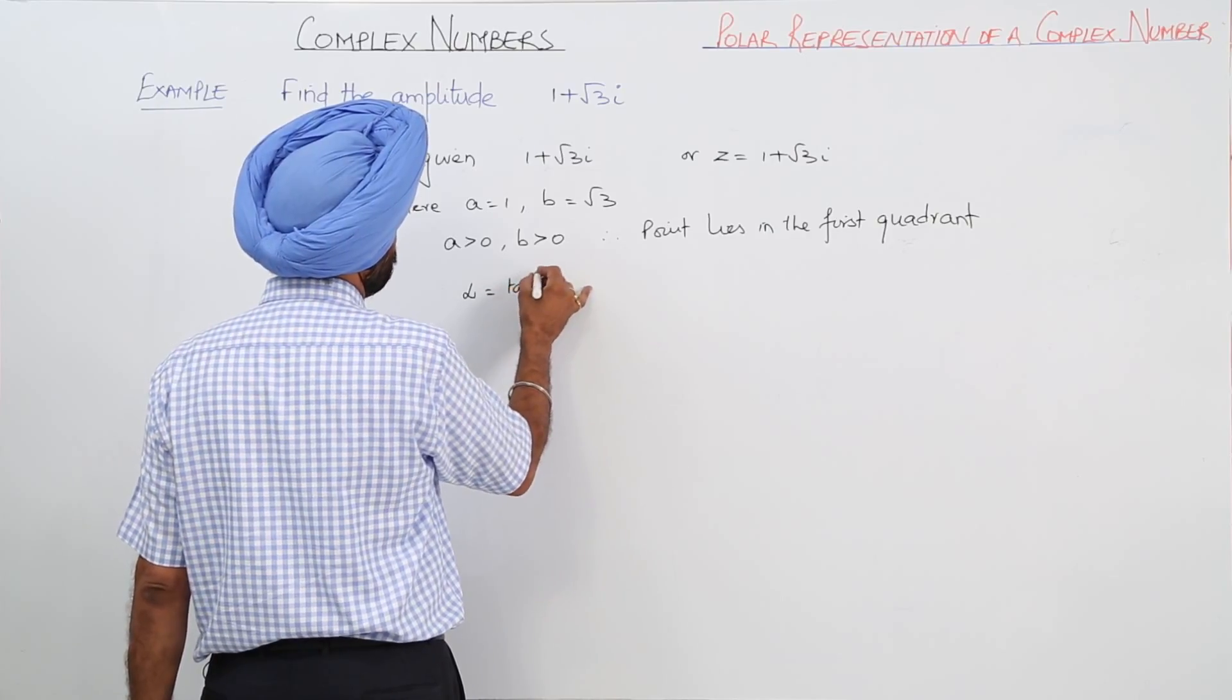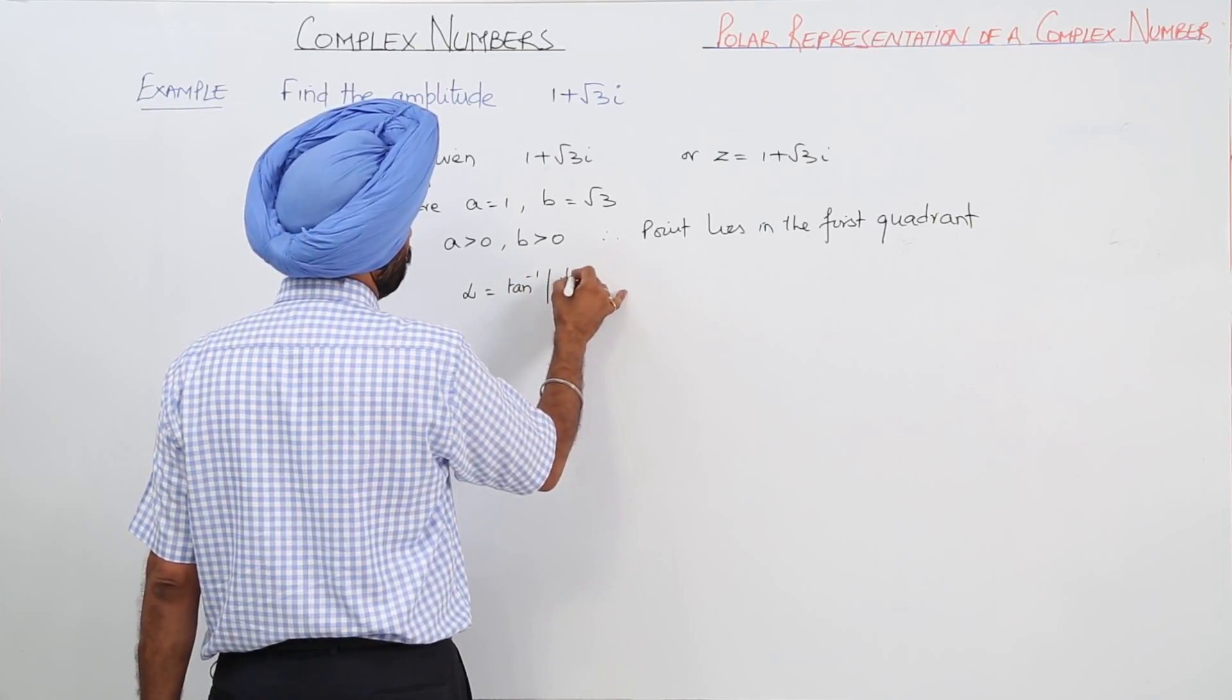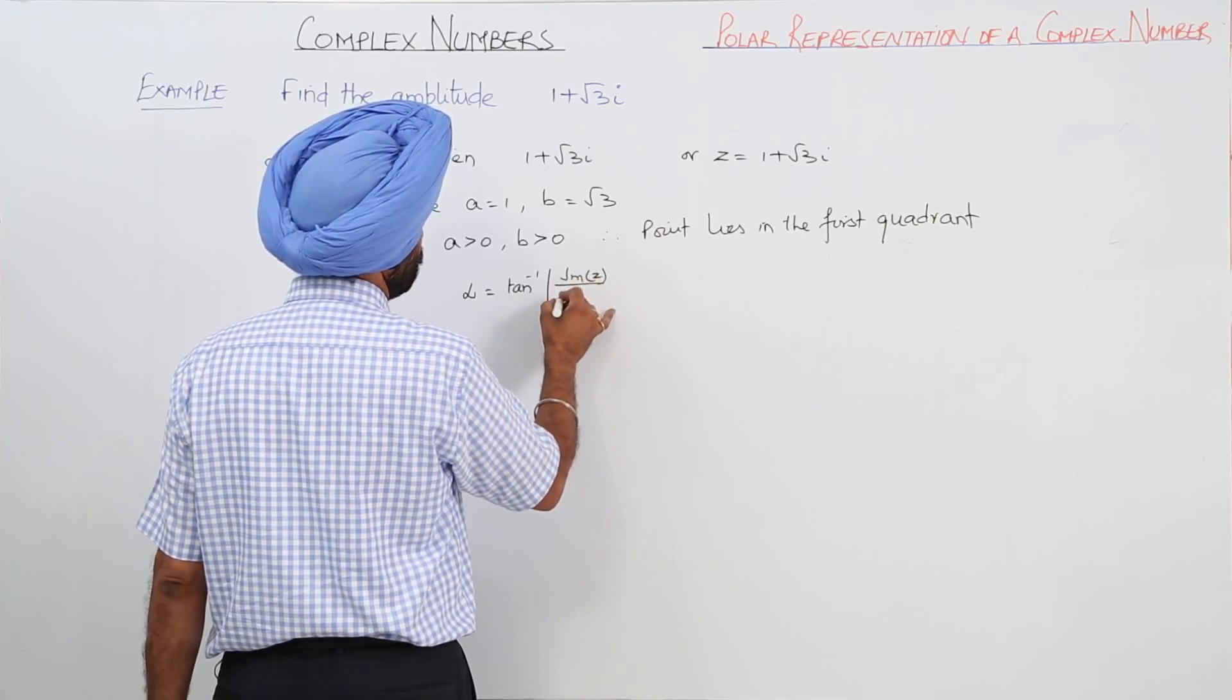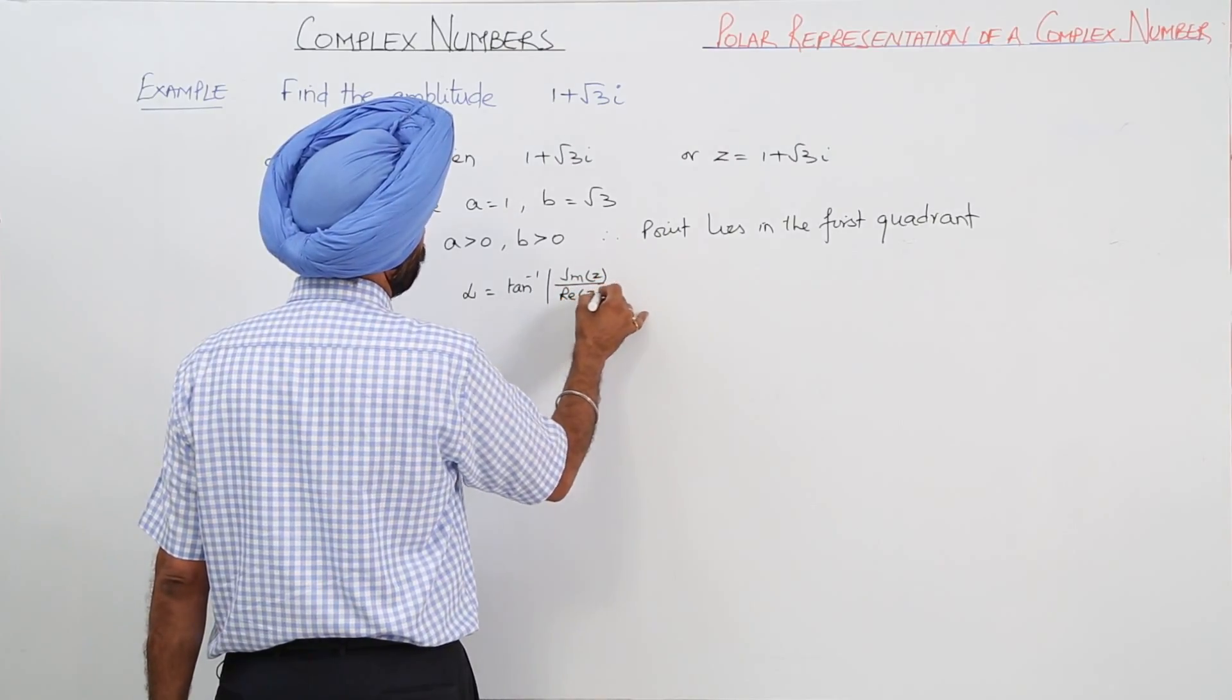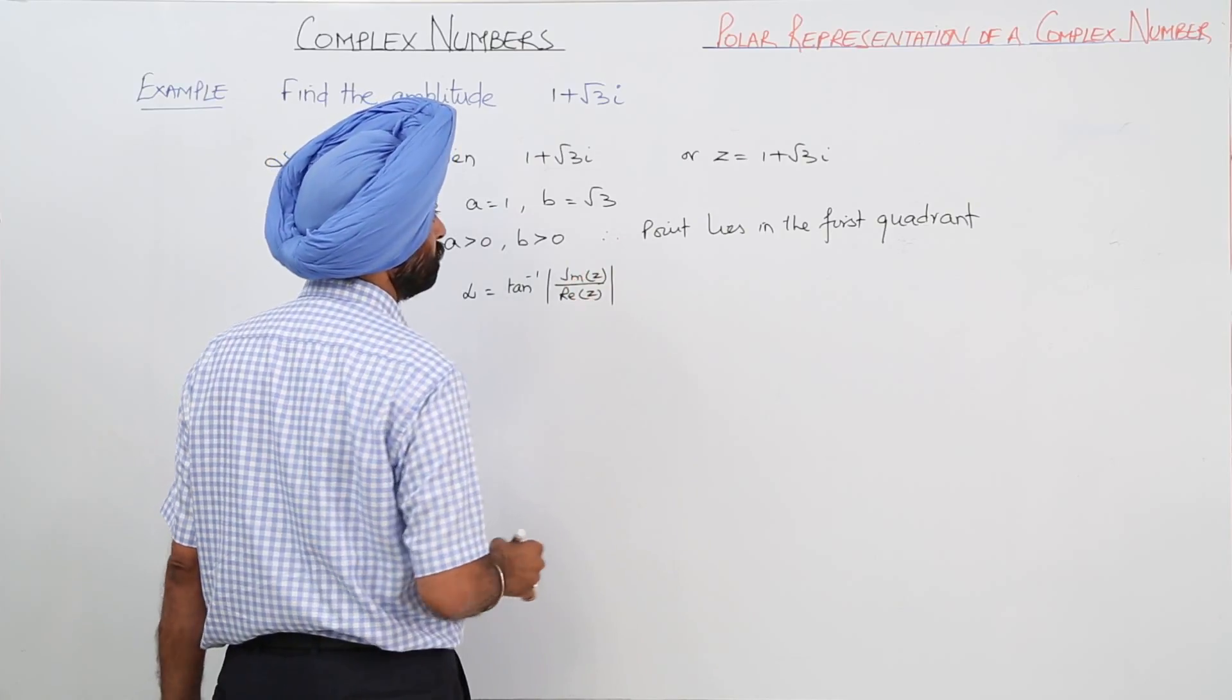It is tan inverse of the imaginary part of a complex number upon the real part of a complex number. Is it clear?